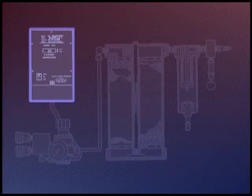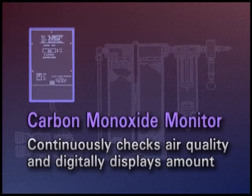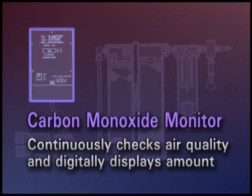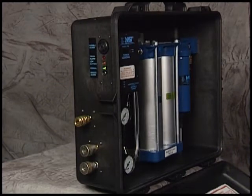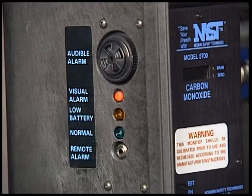A sample of the filtered air is taken and passed through the carbon monoxide monitor. The carbon monoxide monitor continuously checks the air quality per OSHA and CSA regulations and digitally displays the amount present. An audible and visual alarm will alert operators if any dangerous levels of carbon monoxide exist.